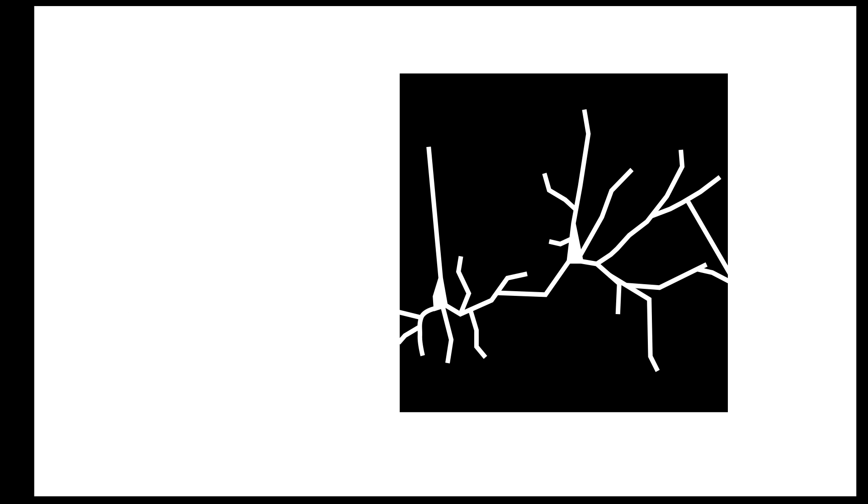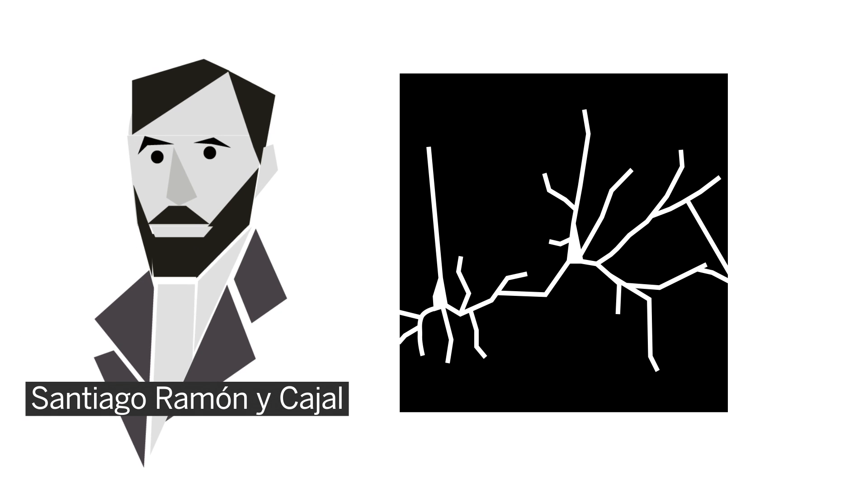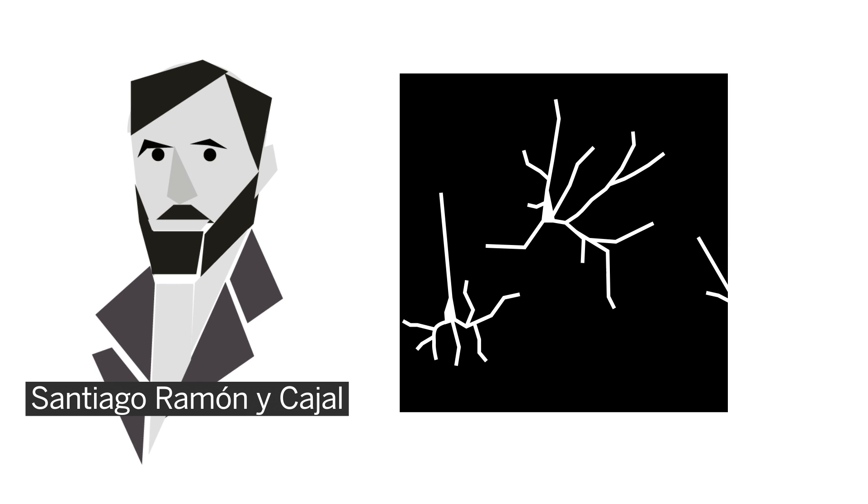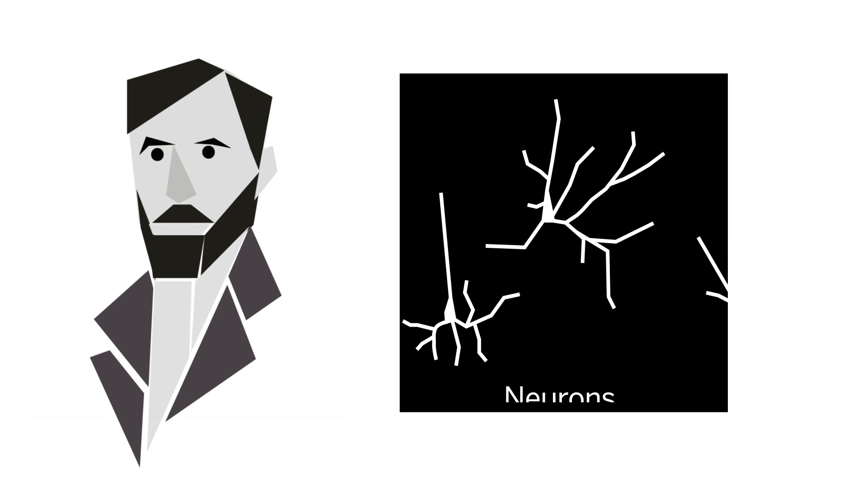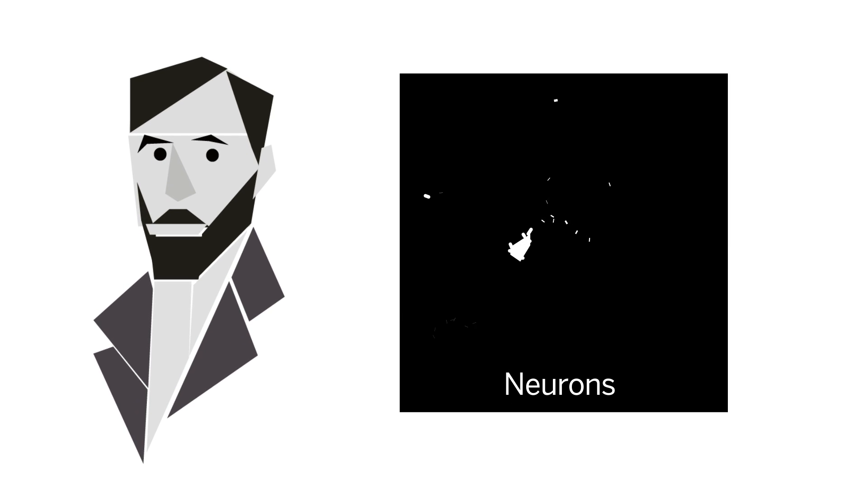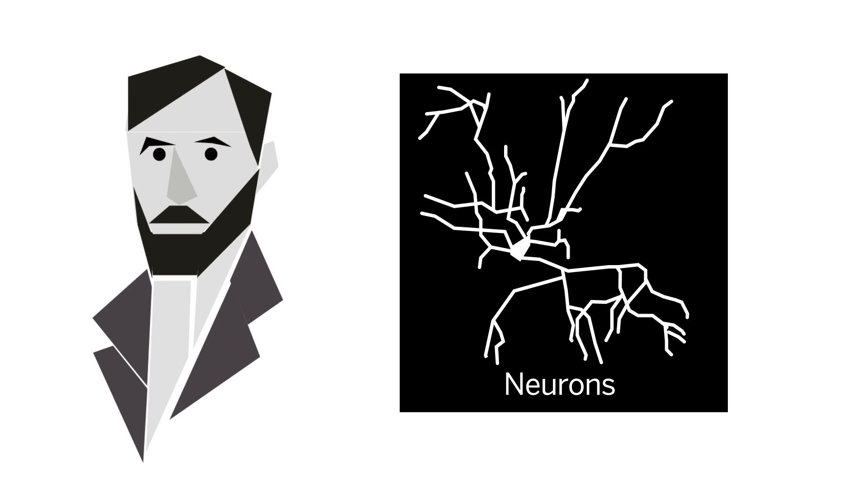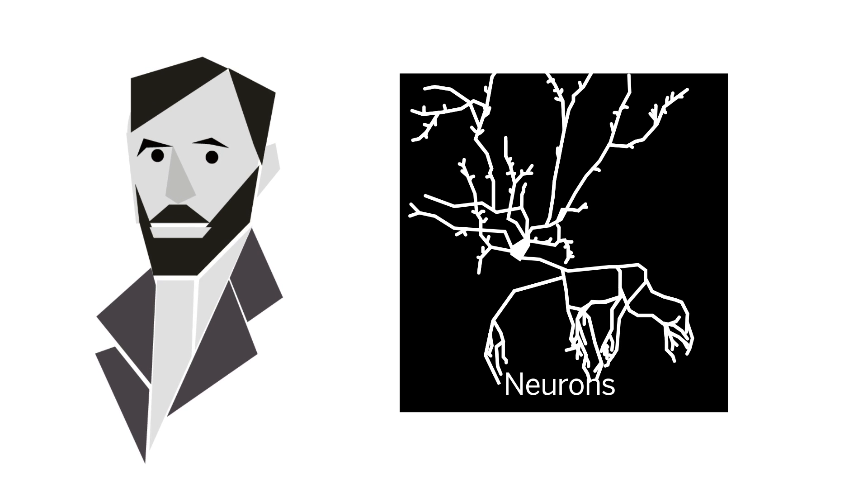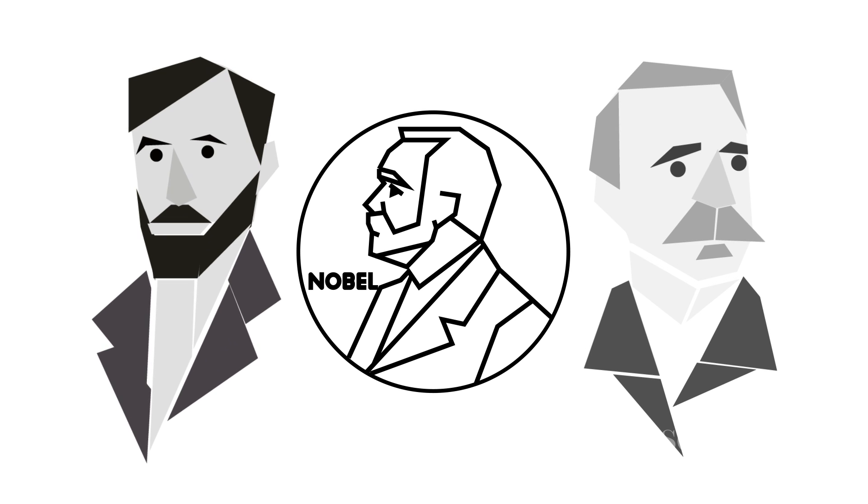Using that technique, a Spanish researcher named Santiago Ramón y Cajal discovered that even though the cells were connected, they were still individual structures, which became known as neurons. By breaking down the nervous system into its smallest components, Cajal set the foundation for the next century of neuroscience. He and Golgi split the Nobel Prize in 1906.